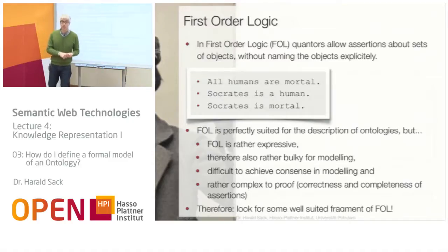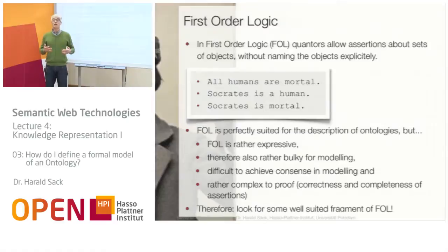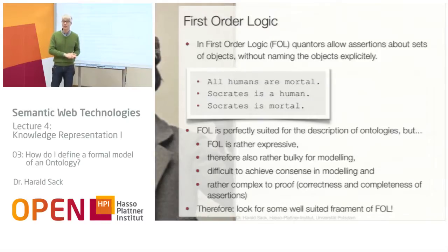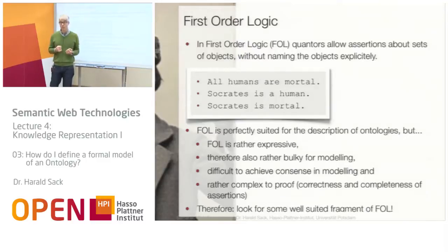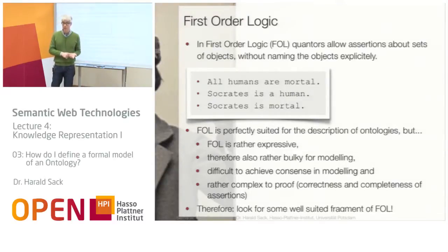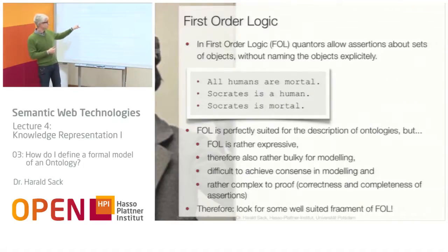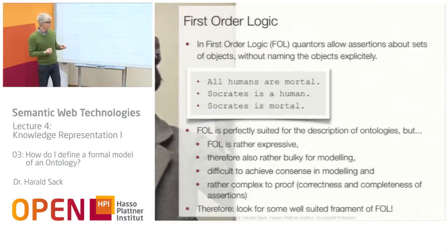What you have in first-order logic are so-called quantifiers — or quantors — which allow assertions about sets of objects even without naming those objects explicitly. For example, you can make statements like 'all humans are mortal.' Then you pick out one human — for example, Socrates — and say 'Socrates is a human.' Because all humans are mortal, it can be induced that Socrates also must be mortal. You can make inductions from these statements.